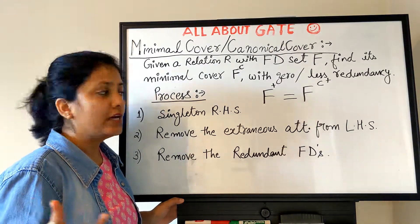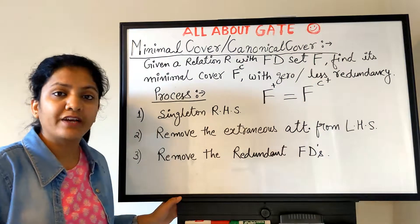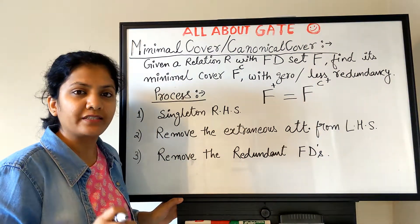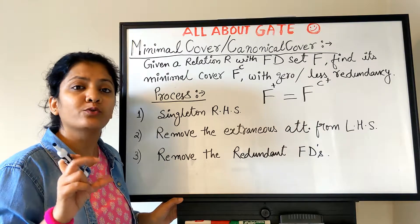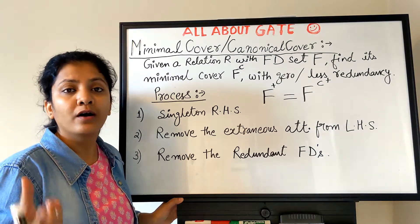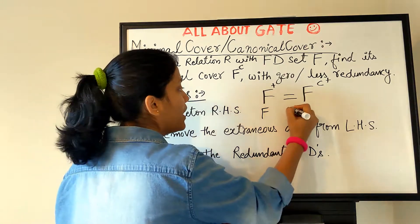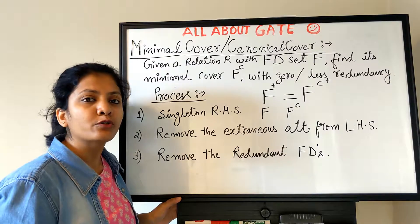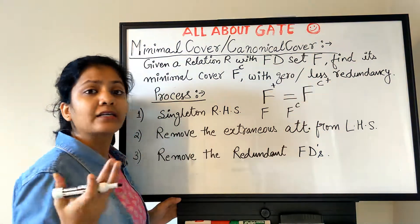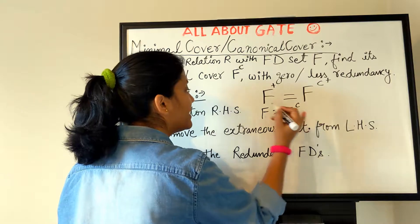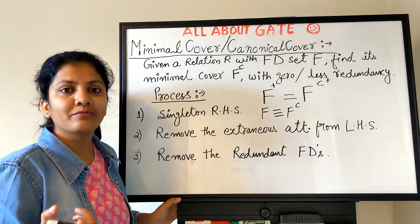They will imply the same functional dependencies when their closures are the same. This is exactly where you can find an application for the equivalence of FD sets, which you studied in the previous session. You remember we used equivalence of FD sets to check whether two given functional dependency sets are equivalent or not. You can apply that here: you have your original set F, you find its minimal cover FC, and you want to know whether they are equal — do they still have the same meaning? Are their closures the same? You have to check for their equivalence.